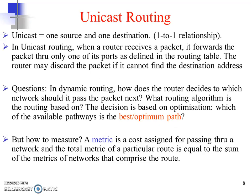Unicast routing, as the name suggests — 'uni' meaning one — involves one source and one destination: a one-to-one relationship. In unicast routing, when a router receives a packet, it forwards it through one of its ports as defined in the routing table, so that it can reach its destination or its next hop. We are discussing unicast routing because RIP, OSPF, and BGP all belong to unicast routing protocols.